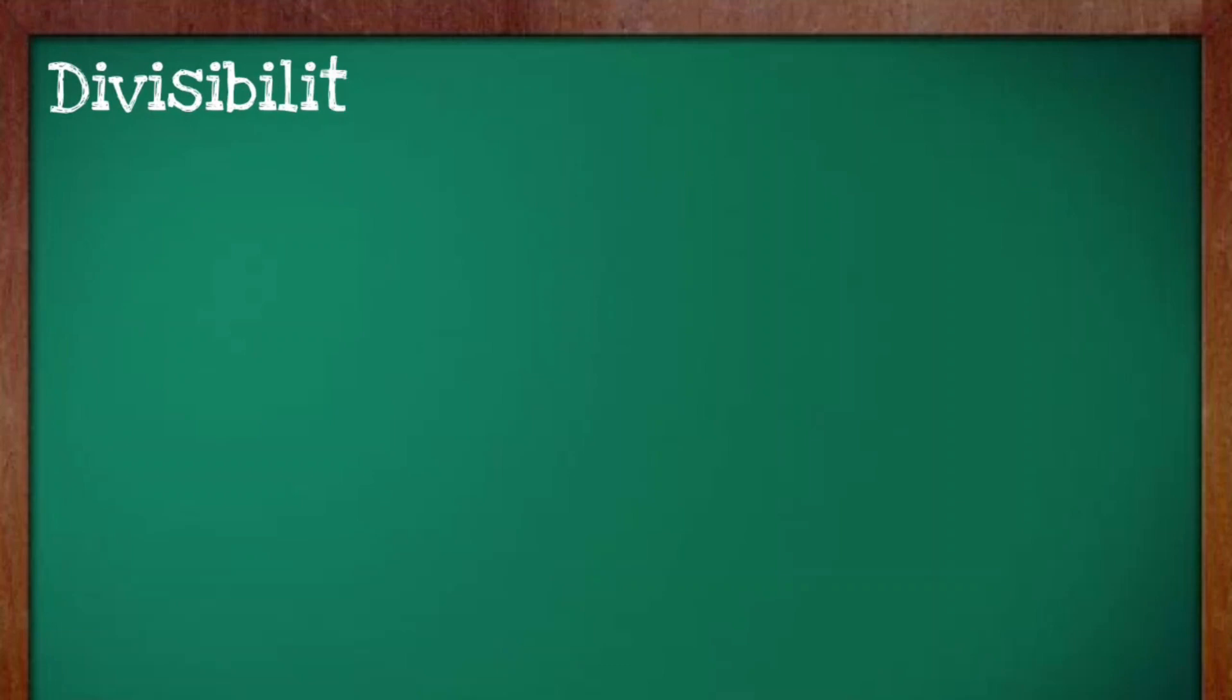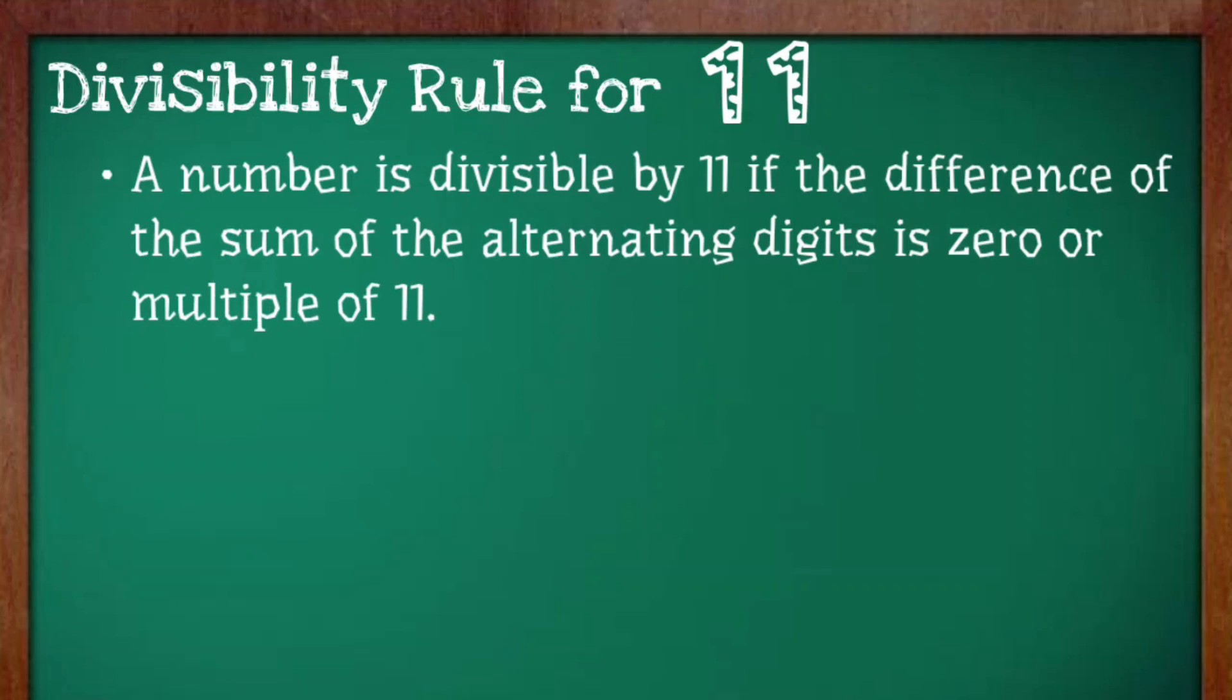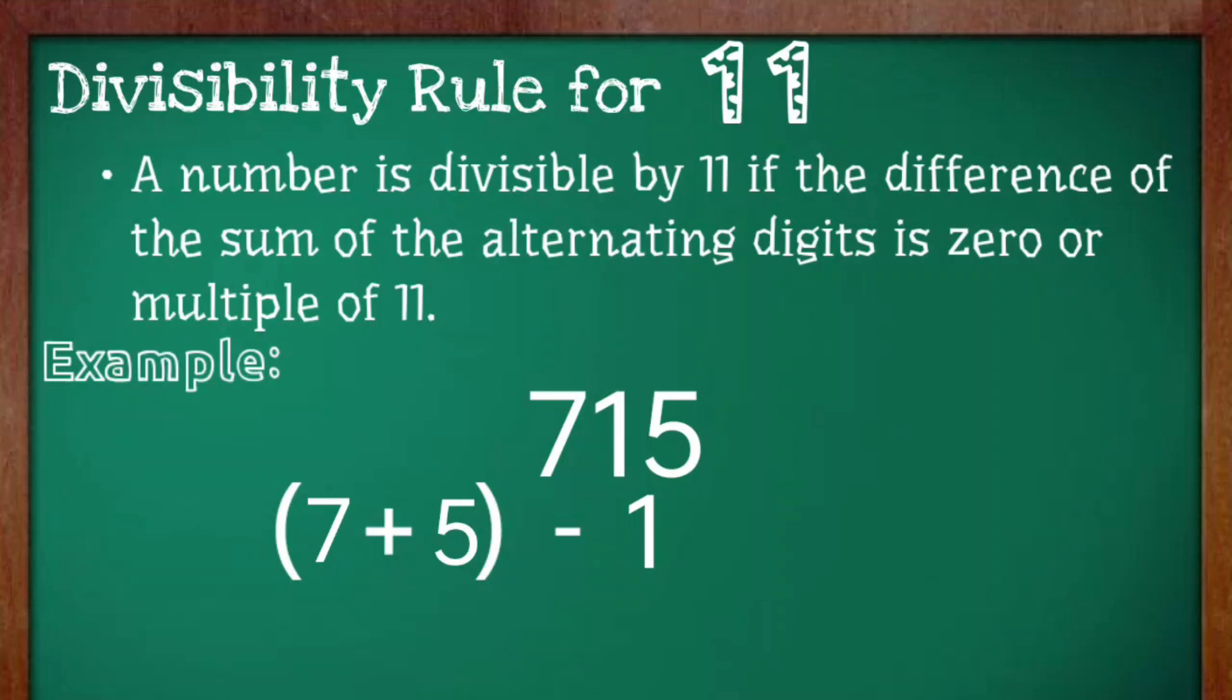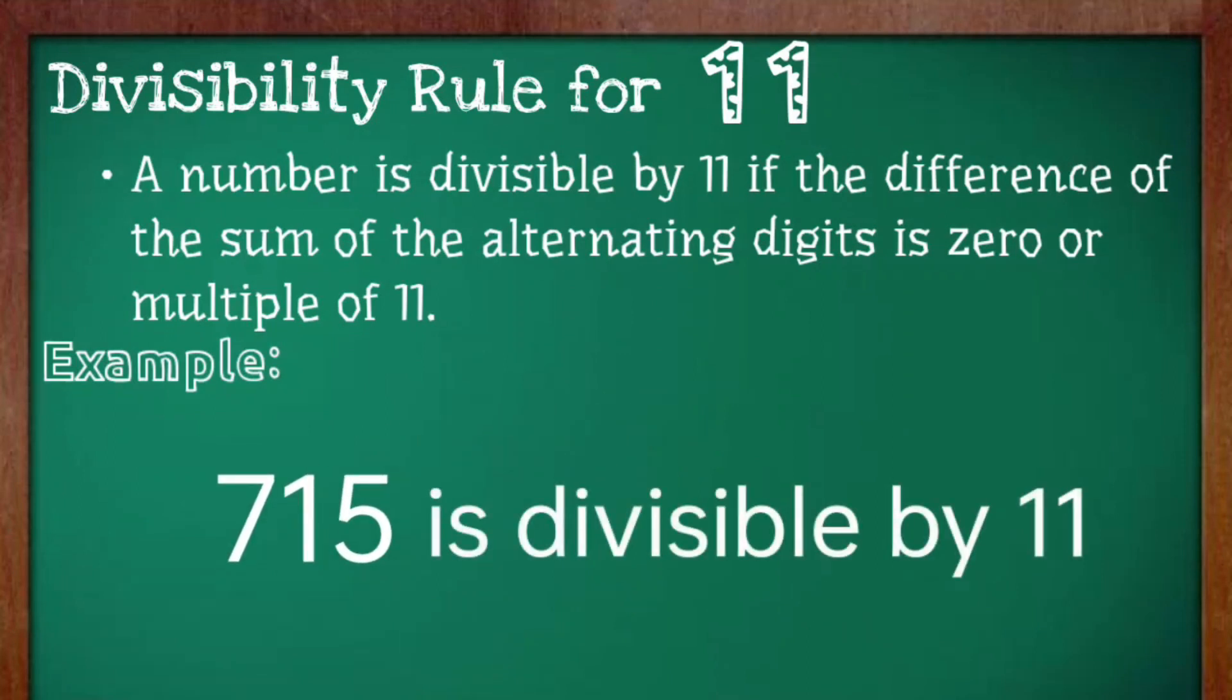Finally, the divisibility rule for 11. A number is divisible by 11 if the difference of the sum of the alternating digits is 0 or multiple of 11. For example, 715. We will be adding 7 and 5 and subtracting it by the alternating number or numbers. In this case, it is 1. 7 plus 5 is equal to 12 minus 1 which is equal to 11. Therefore, 715 is divisible by 11.